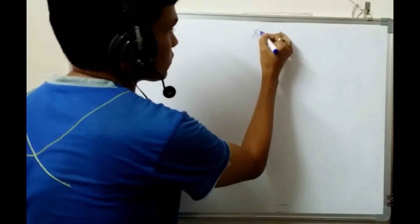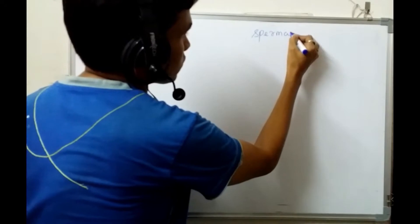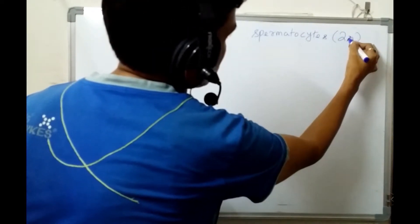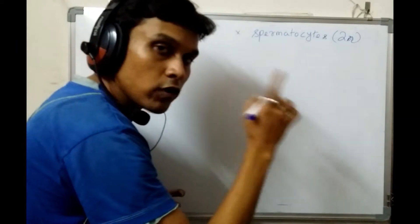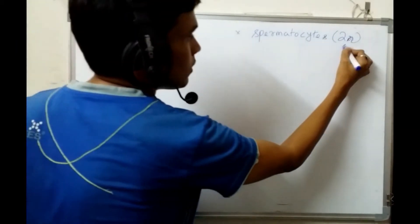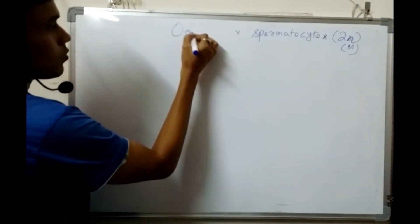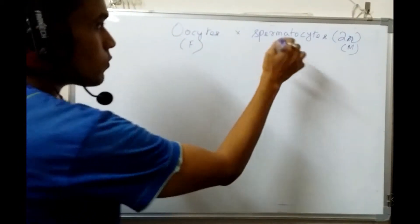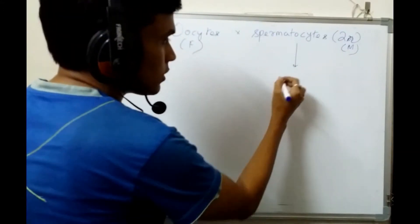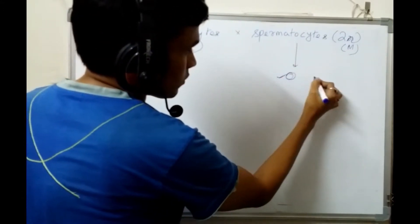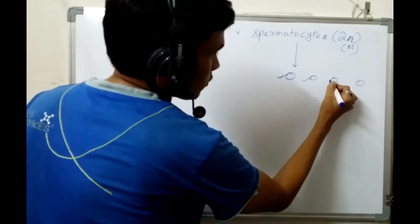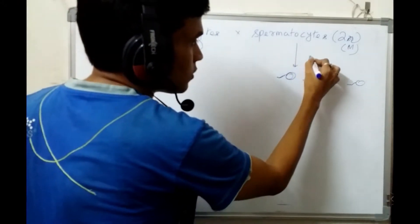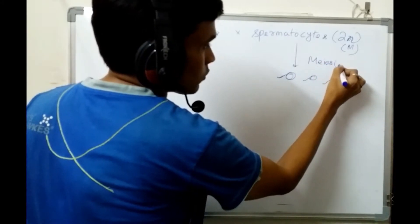Consider the spermatocyte. The spermatocyte also has 2N chromosomes. From one spermatocyte, four sperms are produced — meaning meiosis has occurred. Spermatocytes undergo meiosis to produce four sperm cells.